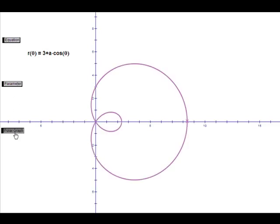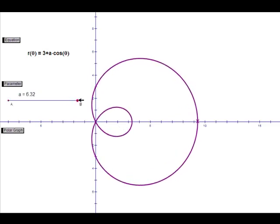Now, here is the graph of a polar equation, and as you can see, the graph changes depending on the parameter.